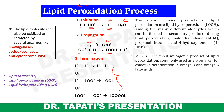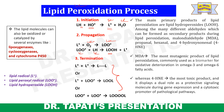MDA is the most mutagenic product of lipid peroxidation and is commonly used as a biomarker for oxidative deterioration in omega-3 and omega-6 fatty acids. 4-HNE is the most toxic product and displays a dual role as a protective signaling molecule during gene expression and a cytotoxic promoter of pathological pathways.